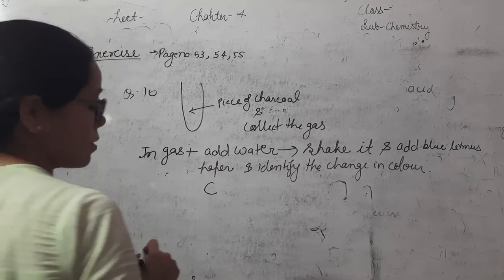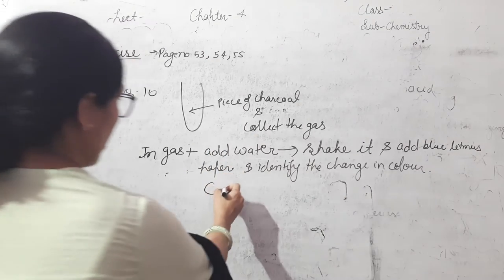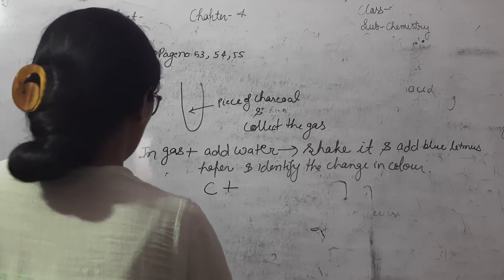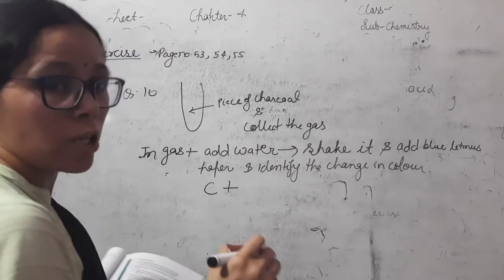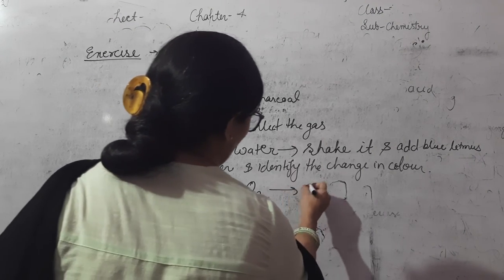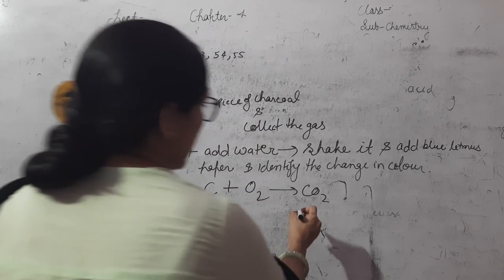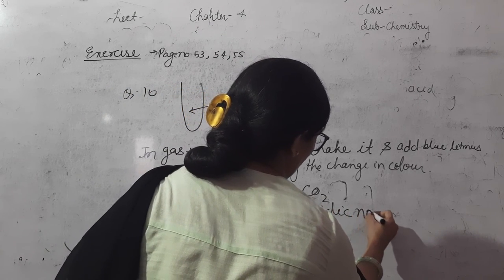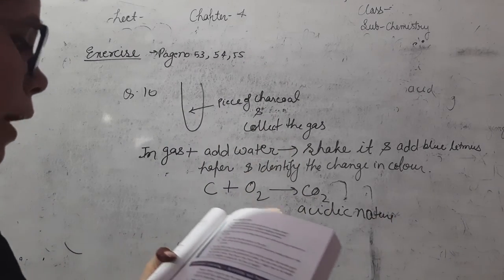Write down the equation. Charcoal is represented by C. Burning reaction is done in the presence of oxygen. So C plus O2 forms CO2. And CO2 is acidic in nature. This is the answer of question number 10.